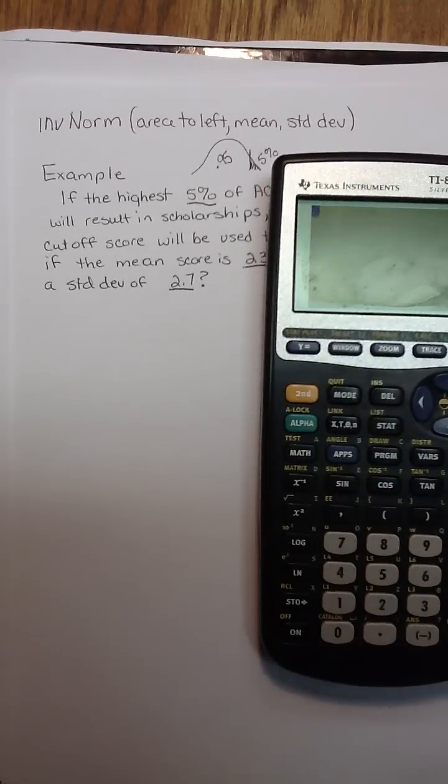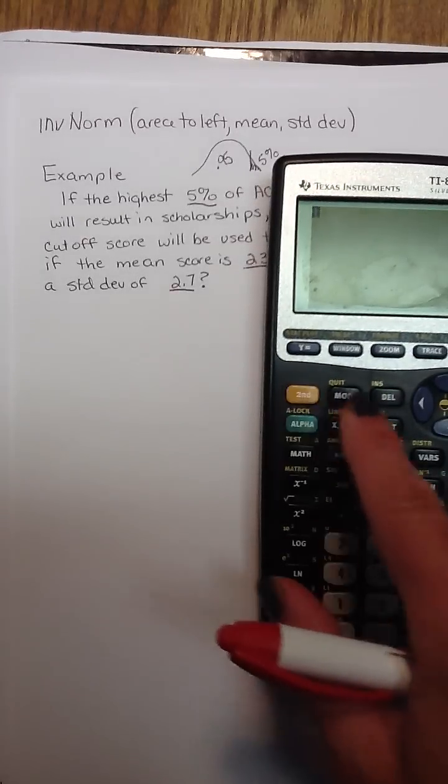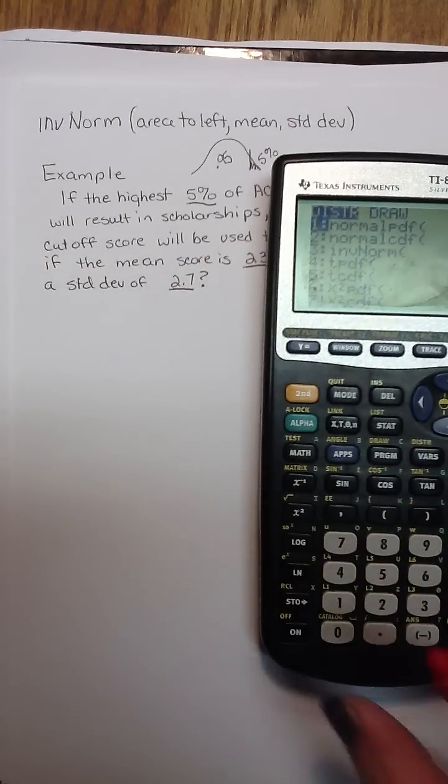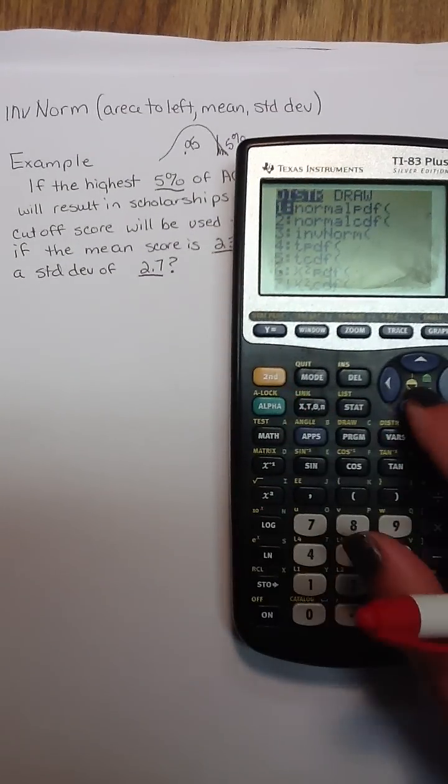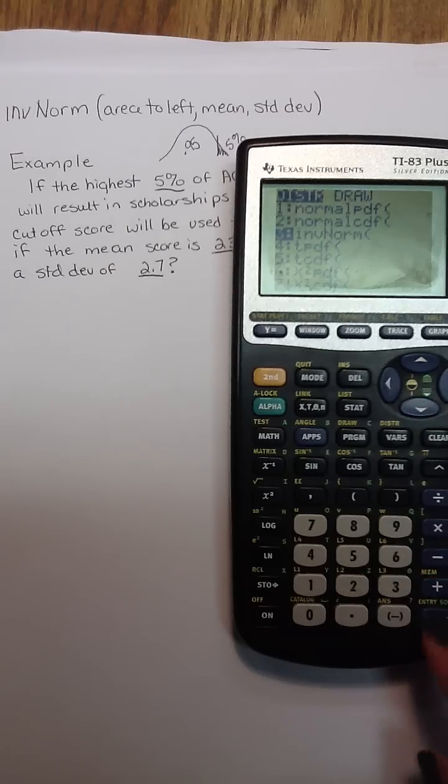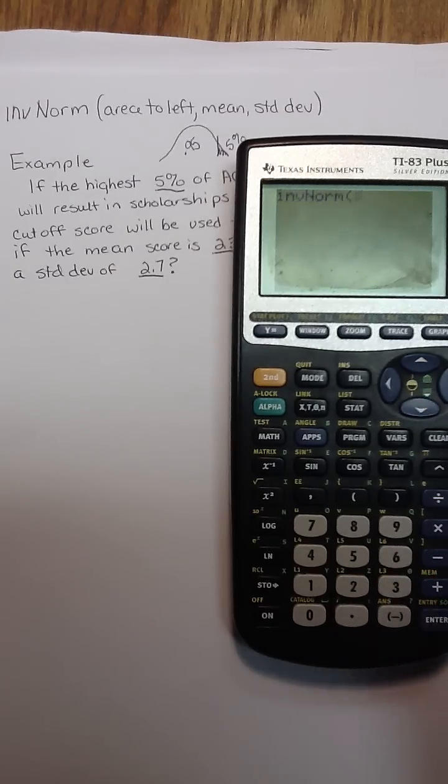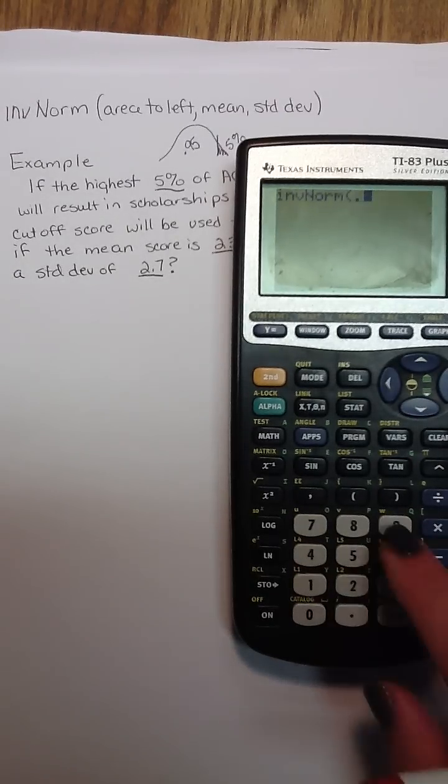In my calculator I'm going to be hitting second distribution and then I'm going to go down to the inverse norm function. I'm going to put the area to the left, .95.